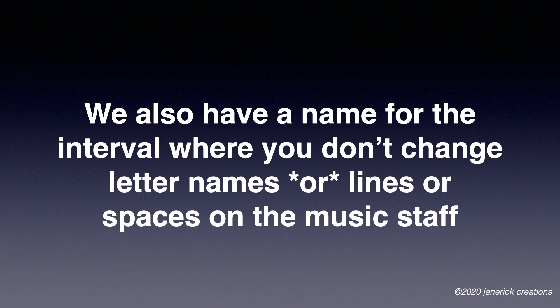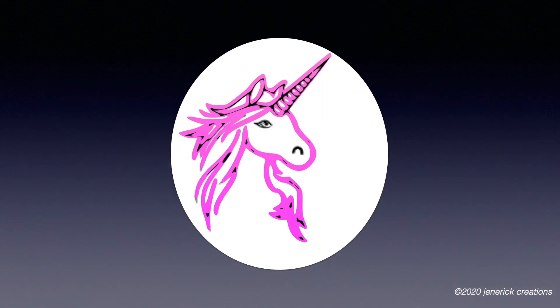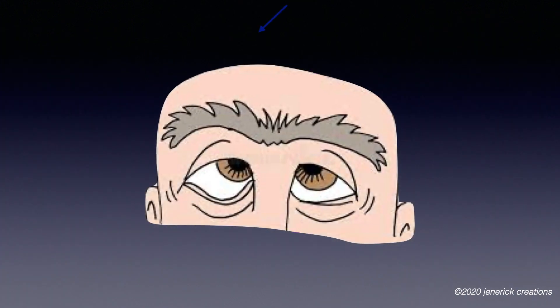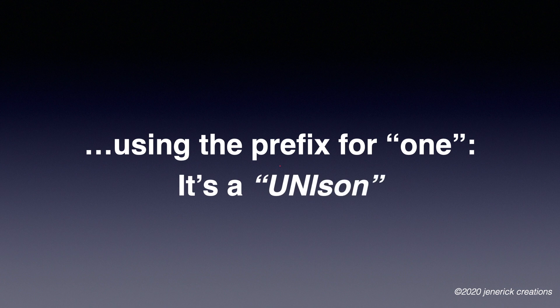We also have a name for the interval where you don't change letter names and you don't change lines or spaces on the music staff. Using the prefix for one, it's a unison.